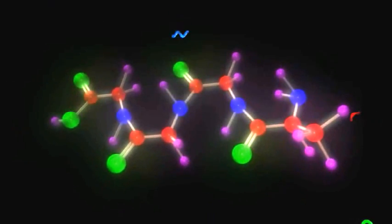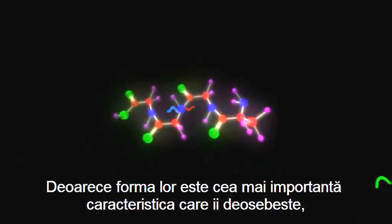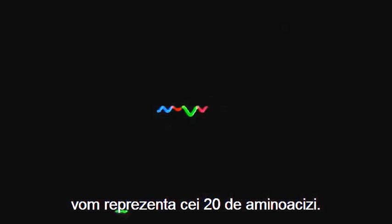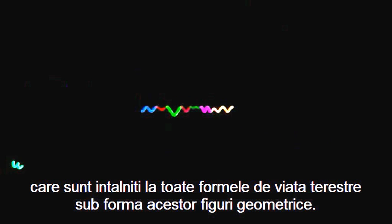Because their physical shape is their most important distinguishing characteristic, we will represent the 20 different amino acids that are used in all life on Earth as these geometric shapes.